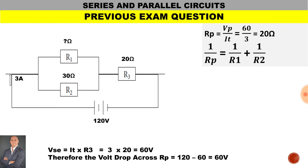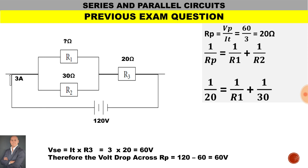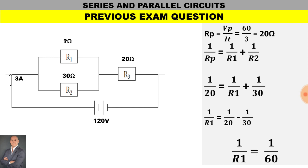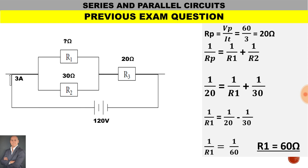Now that we have the resistance of the parallel branch, we can determine the value of R1. Using the formula 1 over RP equals 1 over R1 plus 1 over R2, substituting values: 1 over 20 equals 1 over R1 plus 1 over 30. Rearranging: 1 over R1 equals 1 over 20 minus 1 over 30, which gives 1 over R1 equals 1 over 60. Inverting, the value of R1 is 60 ohms.